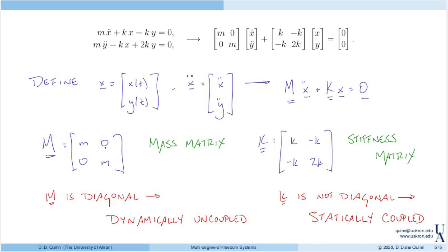In contrast, the stiffness matrix K has non-zero off-diagonal terms, meaning y couples into the x equation and x couples into the y equation — so the system is statically coupled. You can imagine cases where the mass matrix is not diagonal (dynamically coupled) or where the stiffness matrix is diagonal (statically uncoupled). With multi-degree-of-freedom systems, one coordinate can appear in multiple equations, making solutions more involved — but we'll see how to handle that later. That's it for this example!